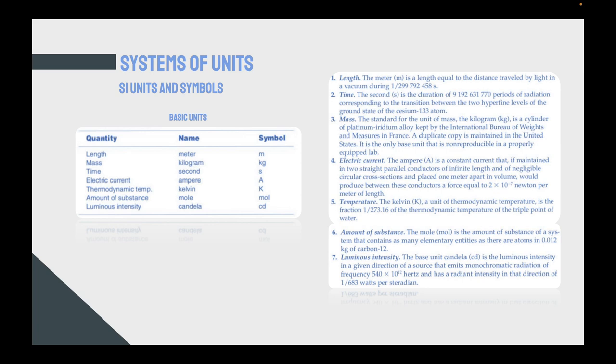In the metric system, if you want to define the length, the length in meters can be identified as the distance traveled by light in a vacuum during one divided by 300 thousands of a second. The time is the duration of roughly 9 million periods of radiation corresponding to the transition between the two hyperfine levels of the ground state of the cesium-133 atom. There are atomic clocks which scientists use as a reference of time, which is the cesium clock. Read through these definitions and let me know if anything doesn't make sense to you.